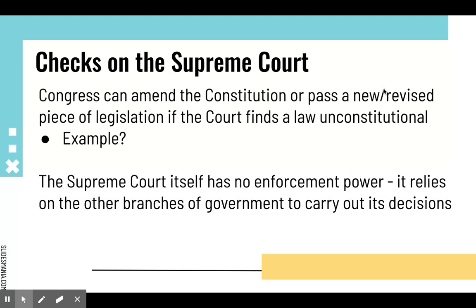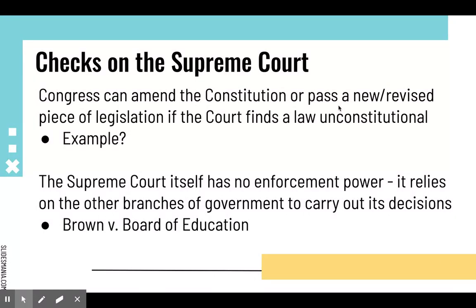Finally, the Supreme Court has a fundamental weakness: it has no enforcement power. The whole purpose of the court is to interpret the Constitution — it has the power to say what the law is, but it does not have any power to enforce or implement decisions. It relies on the other branches of government to carry out those decisions. Brown versus Board of Education is a major example of this weakness and how the court relies on the other branches.